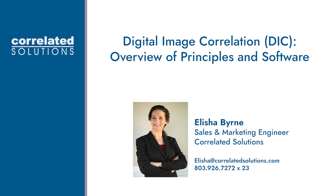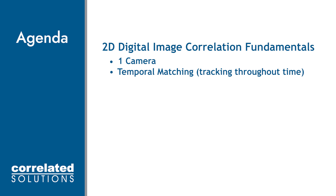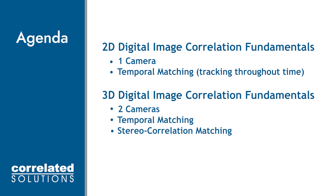Hi, my name is Alicia Byrne and I'm an engineer with Correlated Solutions in South Carolina. Here I'm going to talk about the general principles and theories that digital image correlation is based on. First we'll cover 2D digital image correlation and how we use images from one camera to match and track data throughout time. Then we'll cover 3D digital image correlation, where we use the method discussed in 2D correlation to track the images throughout time, but we'll use images from two cameras so that we can use stereo correlation to get 3D data.